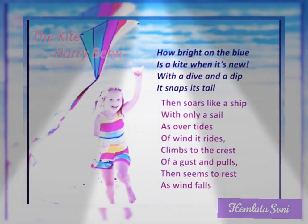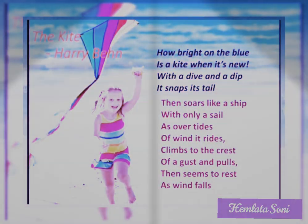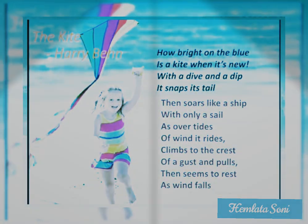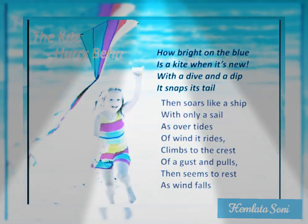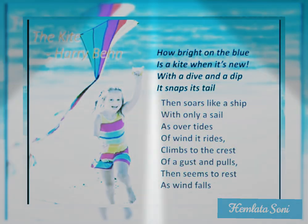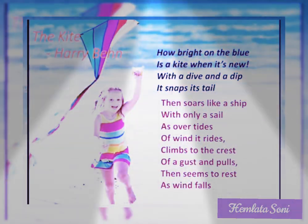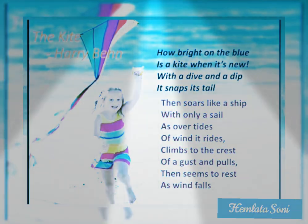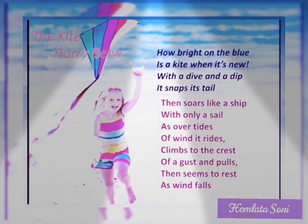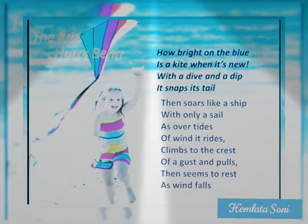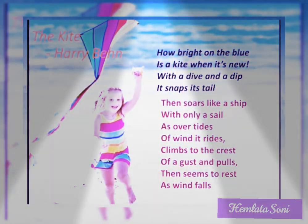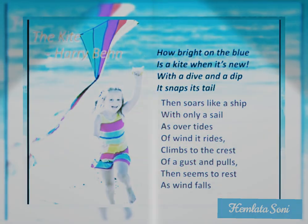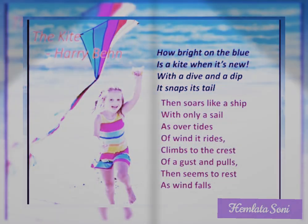Here's the poem — The Kite — composed by Harry Behn. You will recite the poem after me. How bright on the blue is a kite when it's new, with a dive and a dip it snaps its tail, then soars like a ship with only a sail, as over tides of wind it drives.